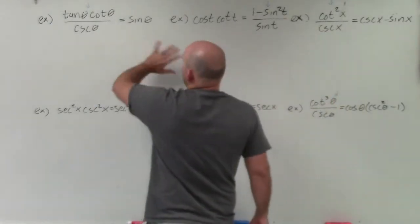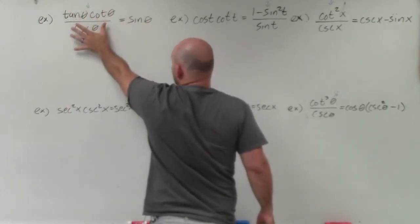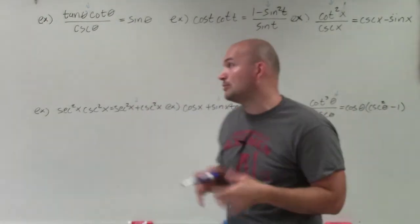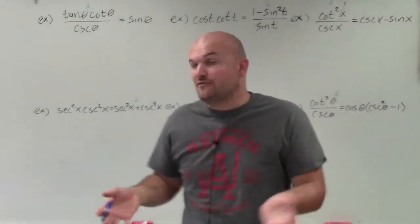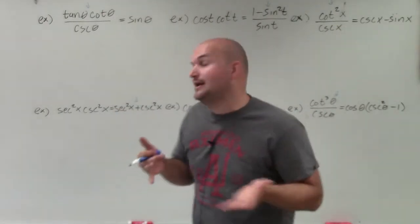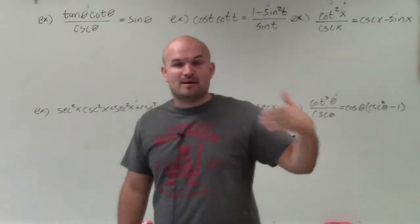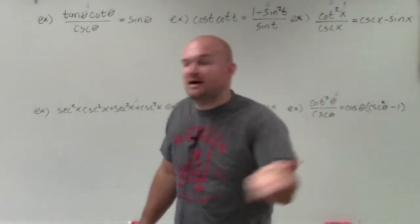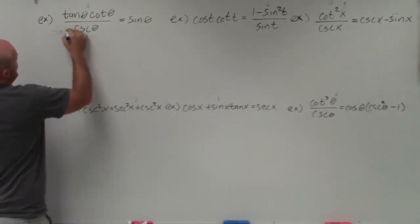In this first example, we can obviously see that the left side is much more difficult than sine of theta, so I'm going to try to simplify the left side so it looks like sine of theta. This is a rational expression, so whenever we have fractions, let's get rid of the fractions. For our left side to look like the right side, I've got to get rid of the fraction. I have cosecant of theta in the denominator, and whenever we want to get rid of something in the denominator, we multiply it by its reciprocal. The reciprocal of cosecant of theta is sine of theta.